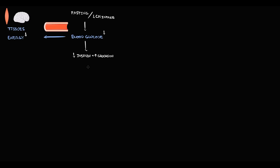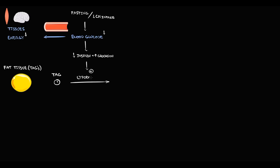During fasting or severe carbohydrate restriction, blood glucose drops. The body senses this decrease and reduces insulin secretion while increasing glucagon secretion. The pro-glucagon state activates lipolysis through activation of hormone-sensitive lipase. As a result, a massive amount of free fatty acids is released into the bloodstream from the breakdown of triacylglycerols in adipose tissue.